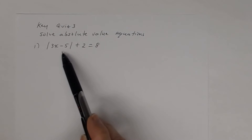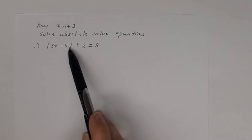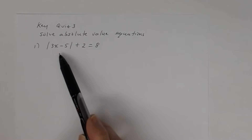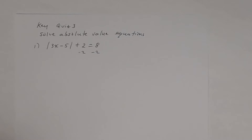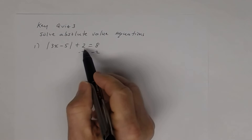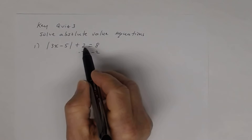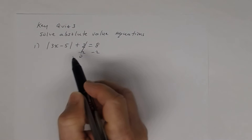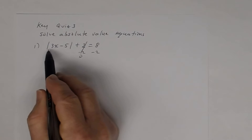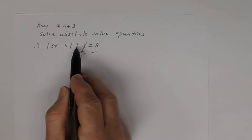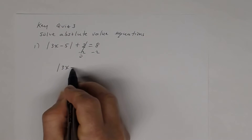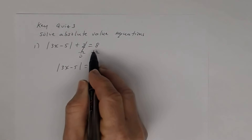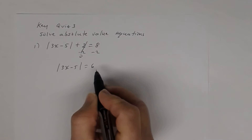When solving this absolute value equation, you need to get the absolute value expression by itself. So the first thing you have to do is subtract 2 from both sides. Combining like terms, 2 and negative 2 is 0, giving you the absolute value of 3x minus 5 equals 6.